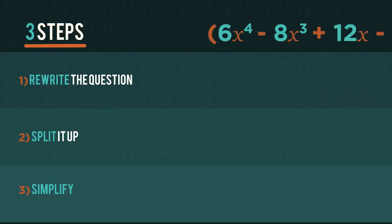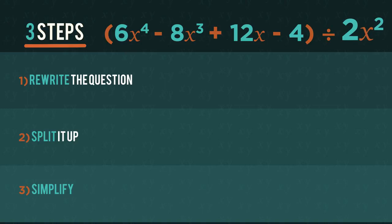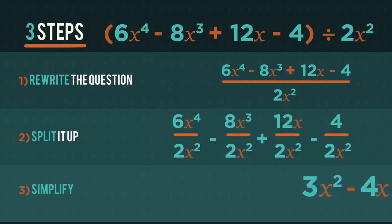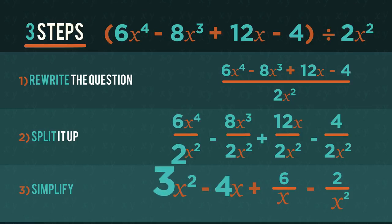We follow the same three simple steps for dividing by monomials too. We write it as a fraction then split it up and finish by simplifying. So 6 divides by 2 to get 3, x to the 4 divided by x squared becomes x squared.